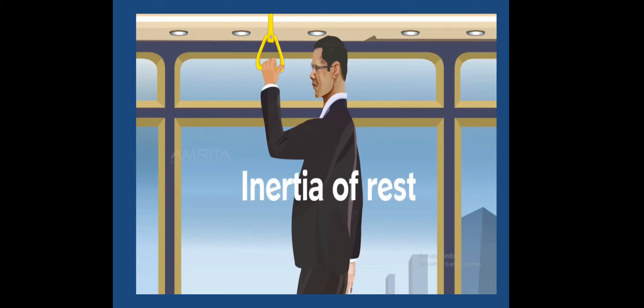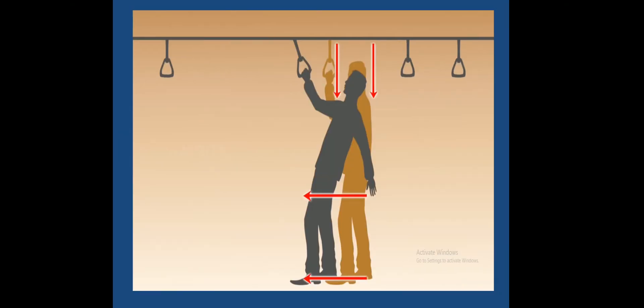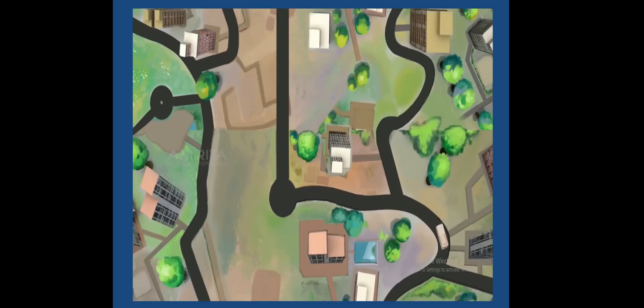This is due to the inertia of rest experienced by the passenger in the upper part of his body. The body is at rest when the bus is at rest. When the bus starts, all of a sudden the lower part of the body is in contact with the vehicle that starts moving, whereas the upper part of the body continues to be at rest because of the inertia of rest. The inertia of rest is the tendency of a body to resist any change in its state of rest.